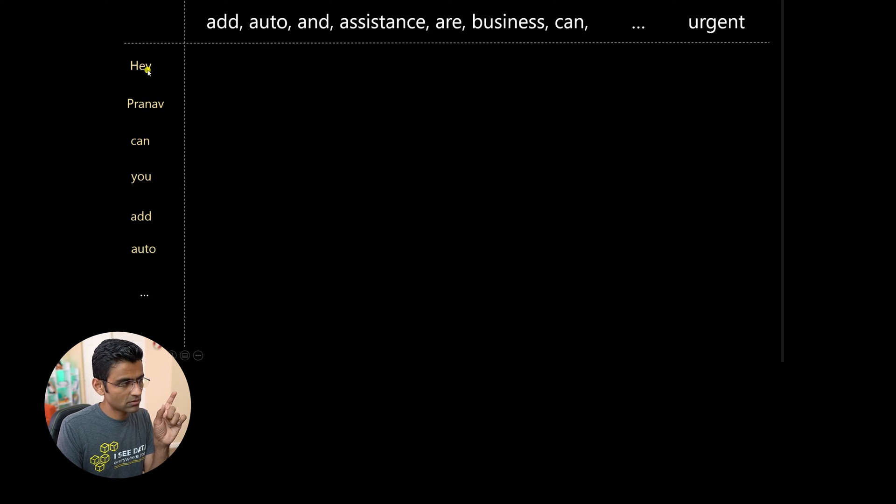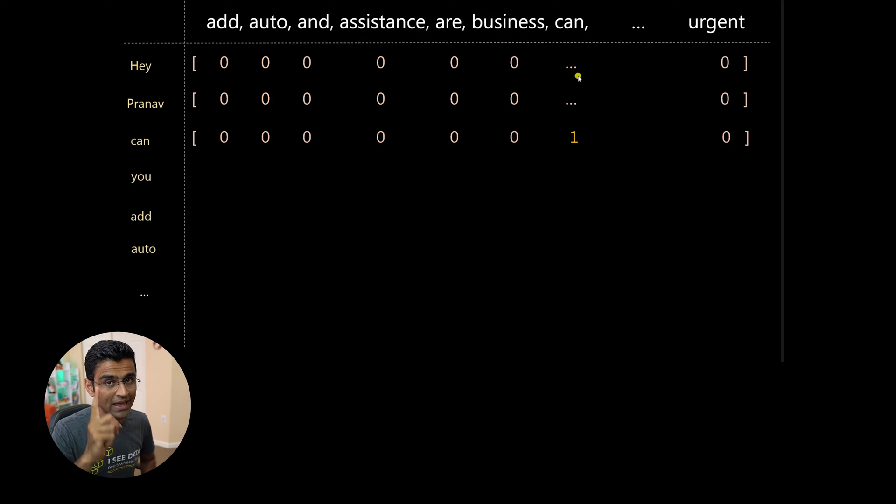And then for each word, what you will do is you will create this kind of vector where the position of that word will have 1 and remaining words will have 0. For example, I have Ken here. So you see Ken here. So Ken is 1. Other words are 0.